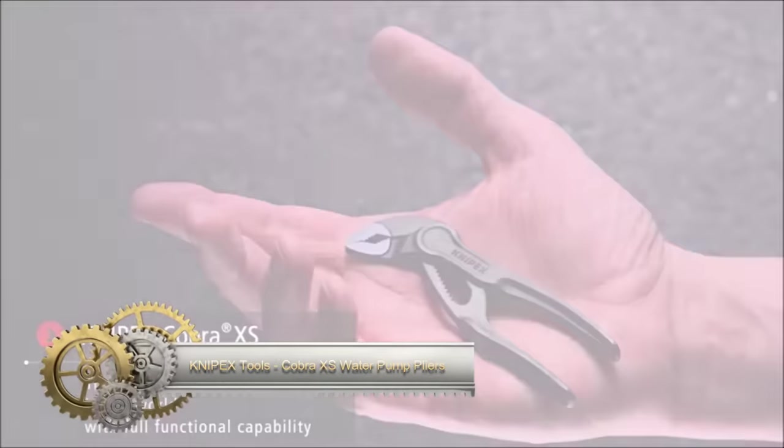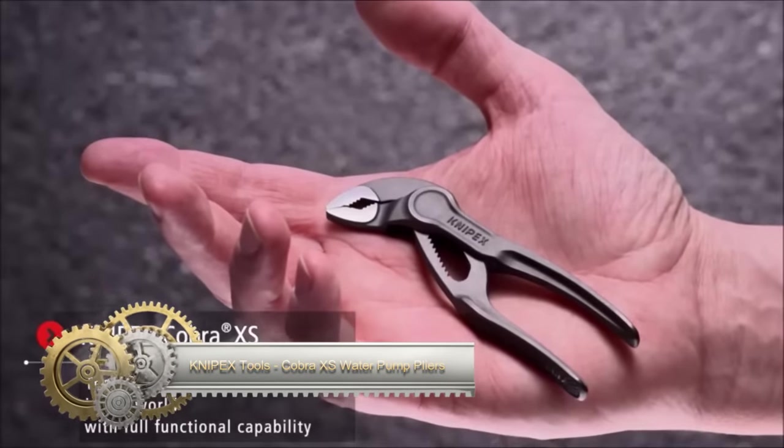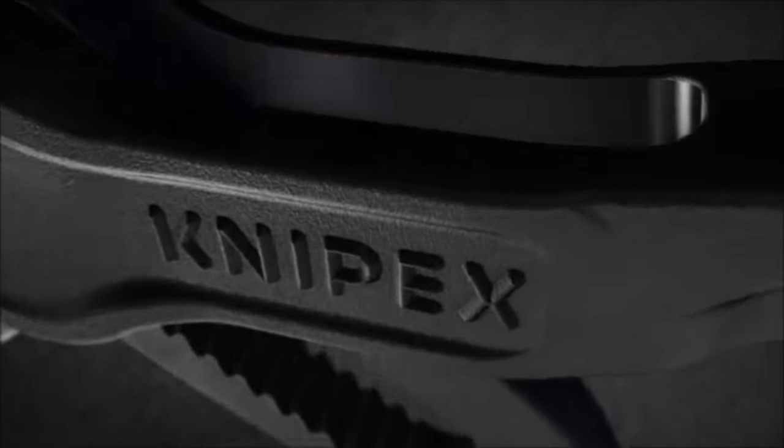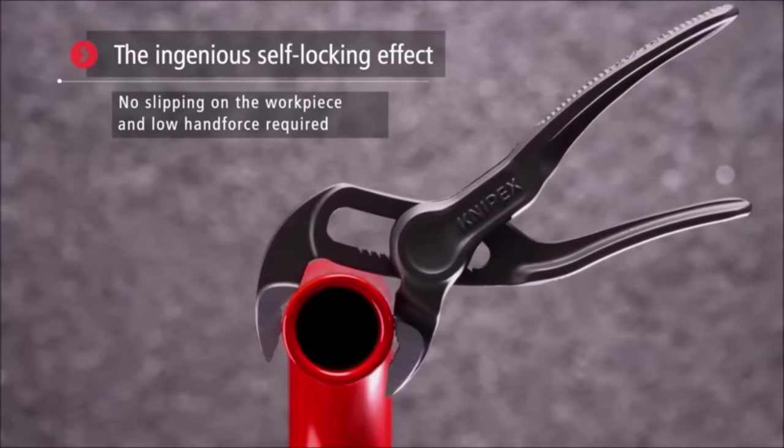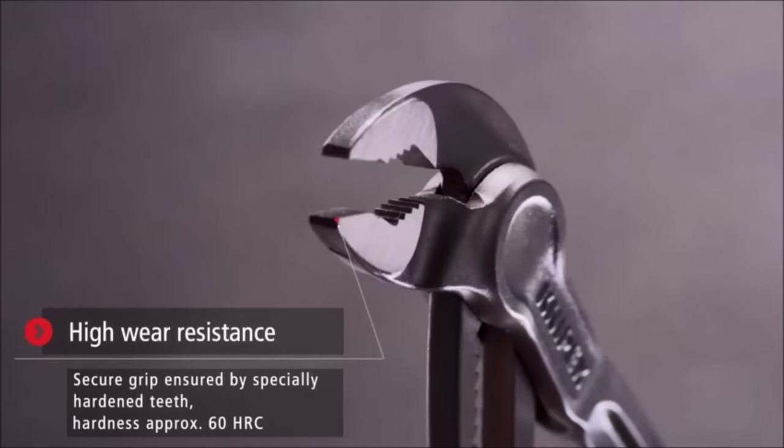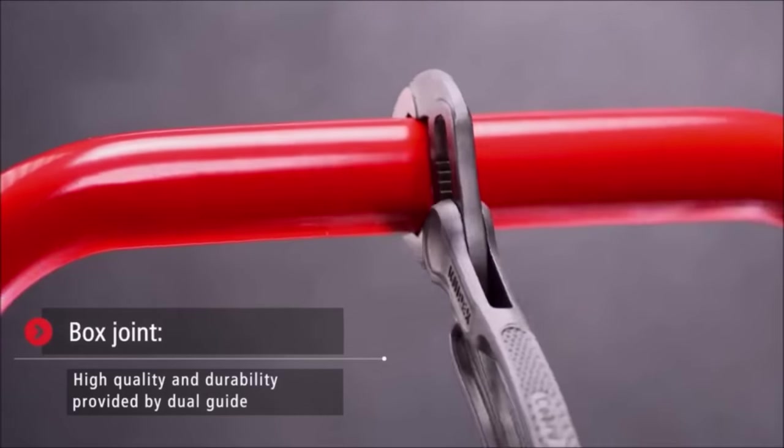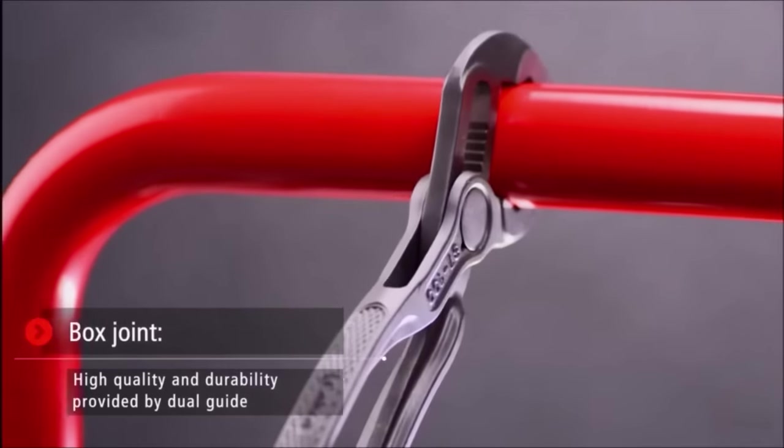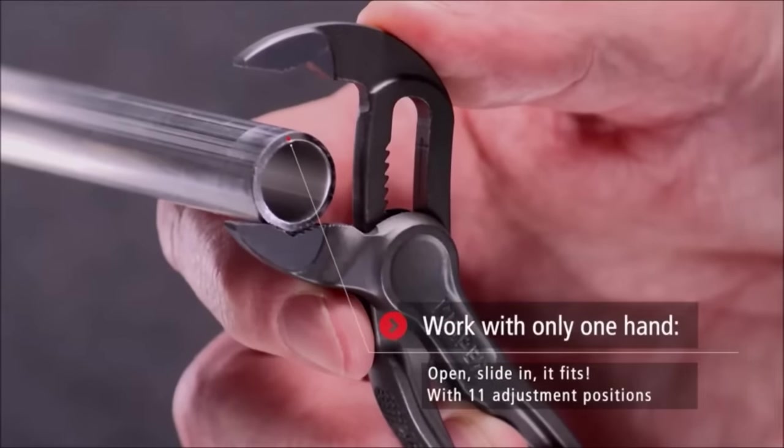The Nipex Cobra XS water pump pliers redefine compact functionality as the world's smallest fully operational water pump pliers at just 100 millimeters in length. Despite their diminutive size, they boast an impressive grip capacity of up to 28 mm in diameter and 24 mm in width across flats. These pliers shine in confined spaces like under sinks and behind appliances, and their lightweight design enhances portability and ease of use.